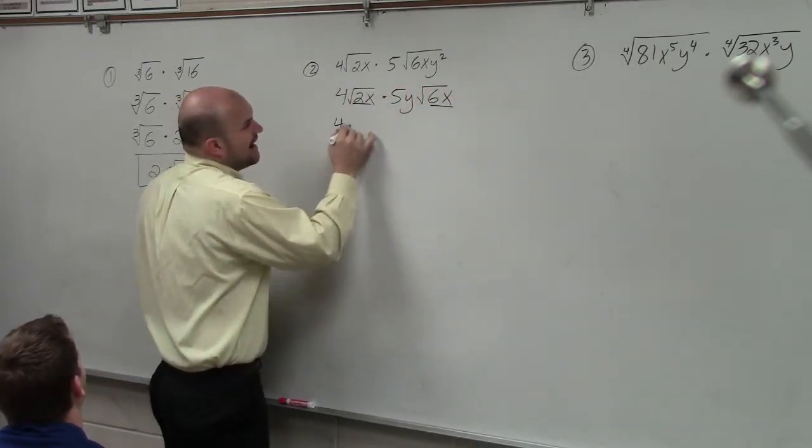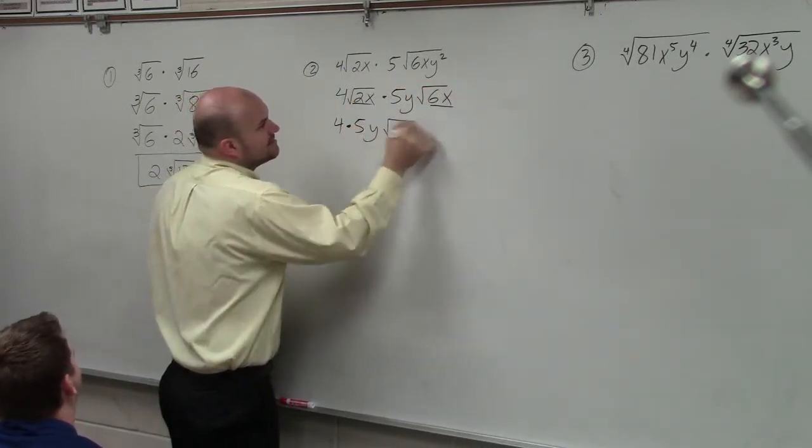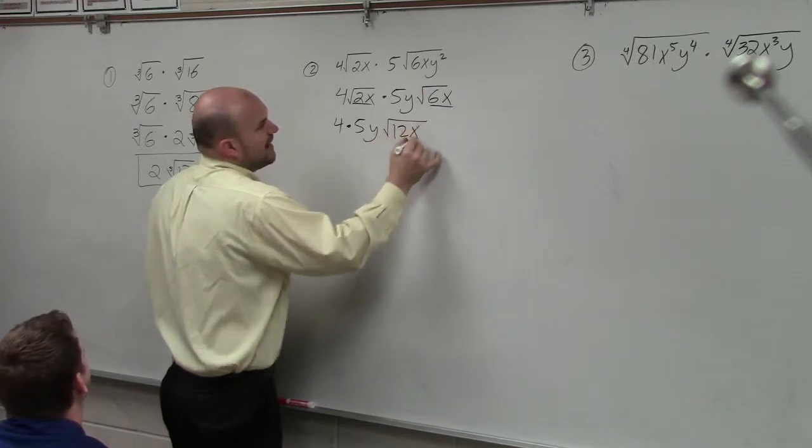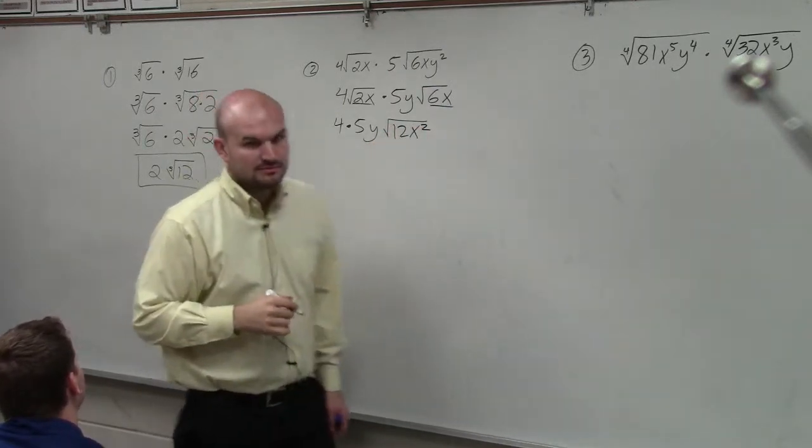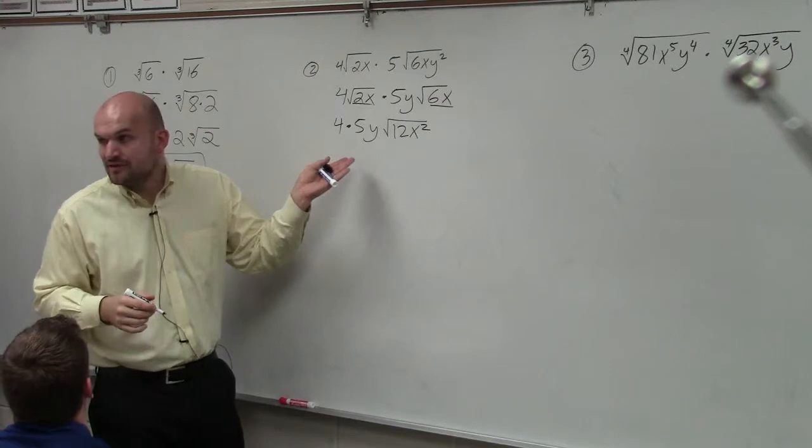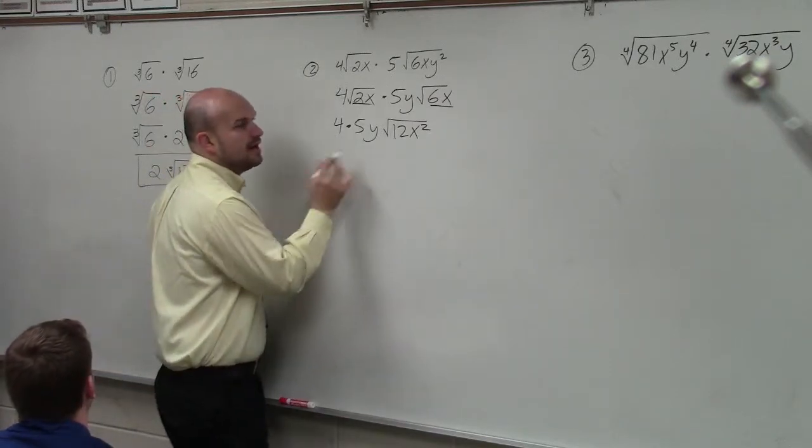So I'm going to have 4 times 5y times the square root of 12x squared. Now obviously we can multiply 4 and 5, right? That becomes 20y.